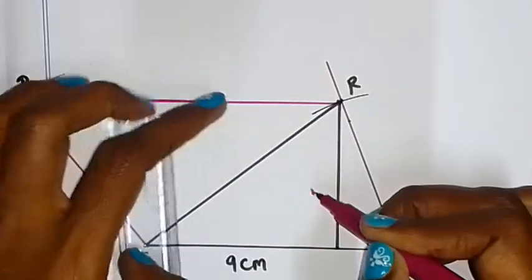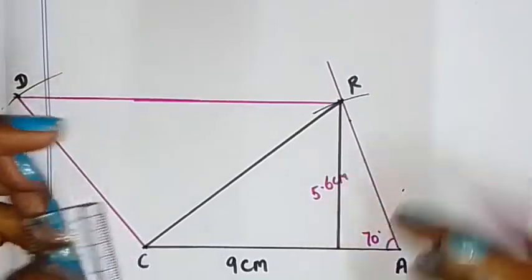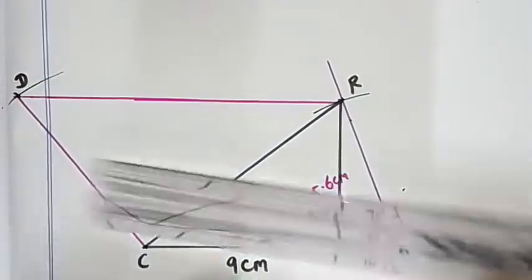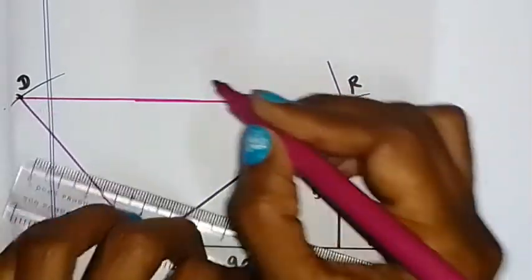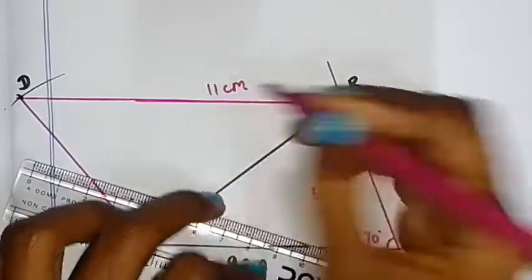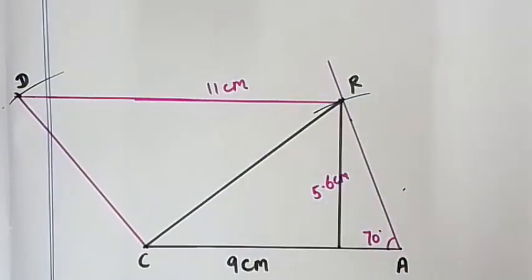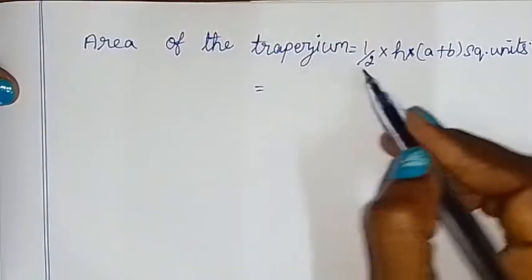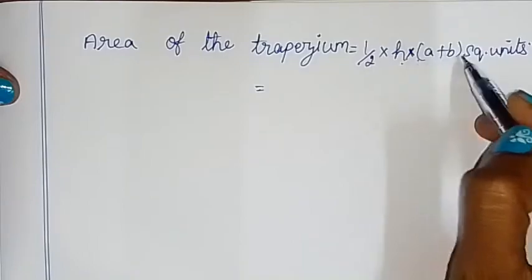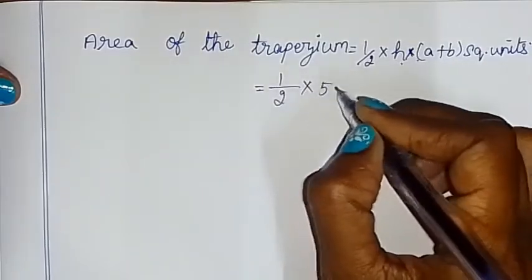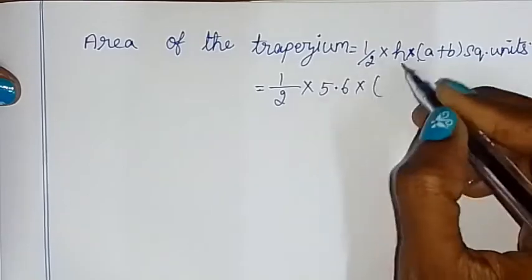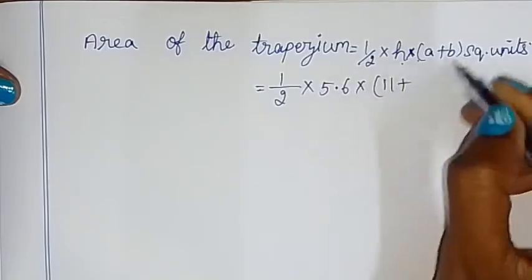So we have area of the trapezium. So this is equal to half into height into a plus b square unit. So that is equal to half into height 5.6 cm, a 11 plus b 9 cm, so cm square.